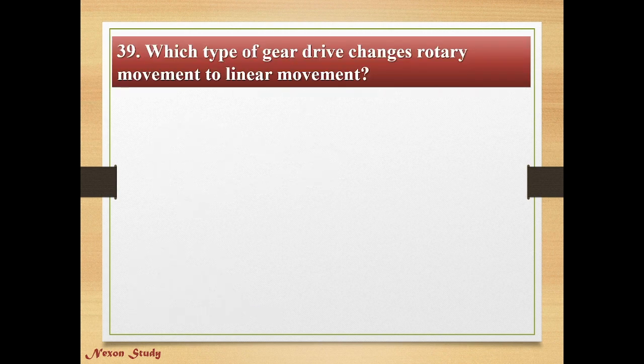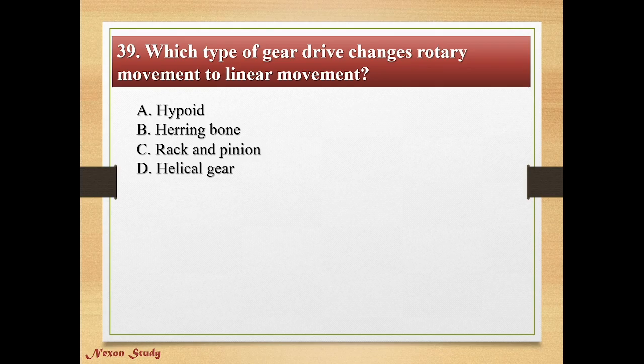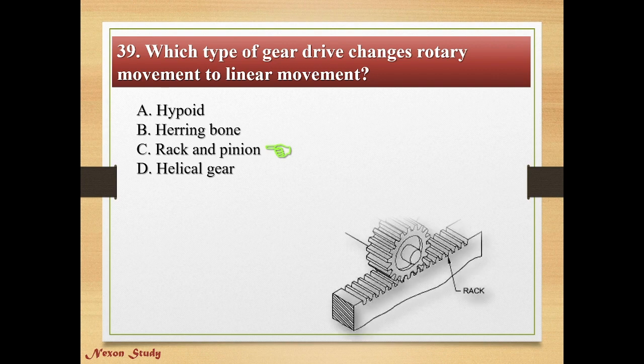Question: Which type of gear drive changes rotary movement to linear movement? Options: hypoid, herringbone, rack and pinion, helical gear. Right answer is rack and pinion. This is the rack and pinion.